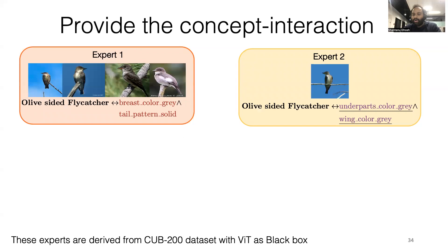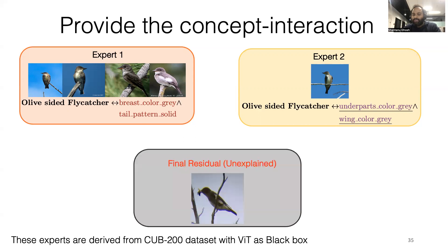Similarly, underparts color gray and wing color gray are unique to Expert 2 to identify this particular sample as olive-sided flycatcher. Finally, this particular sample remains unexplained and it will be covered by the final residual.